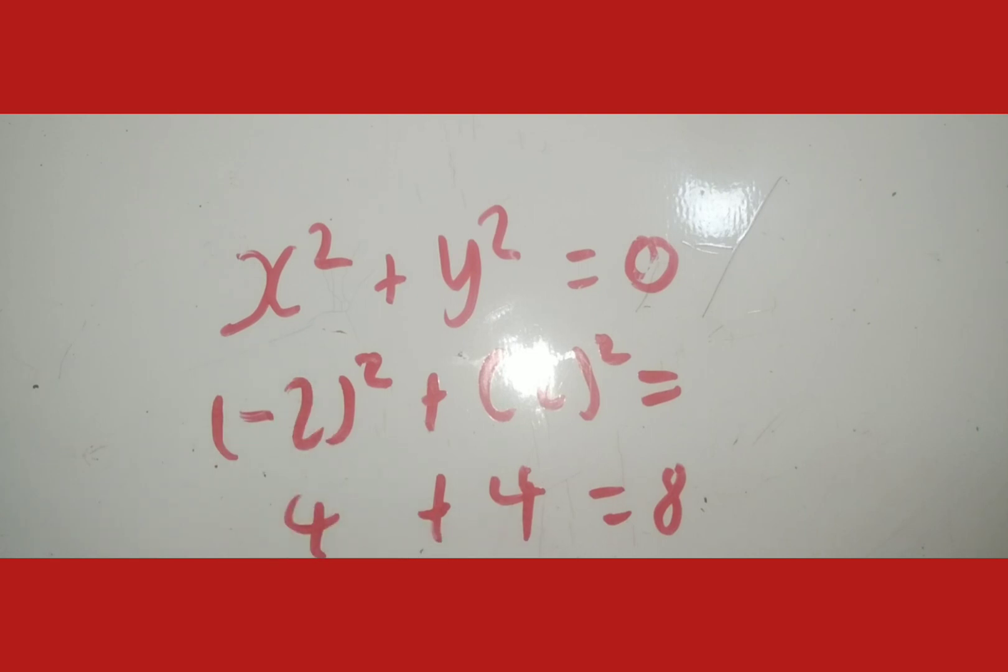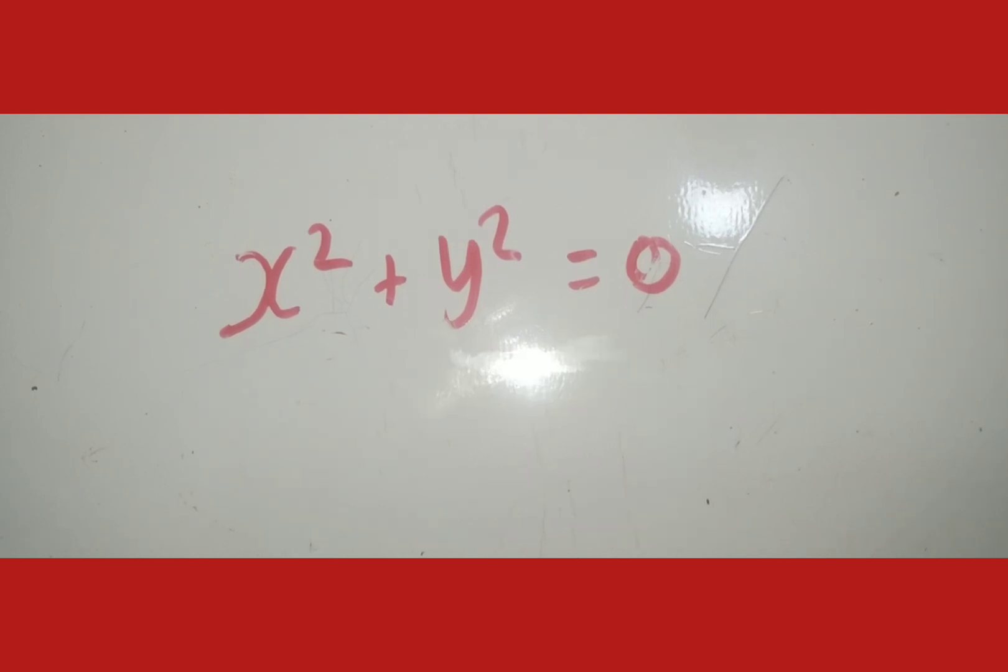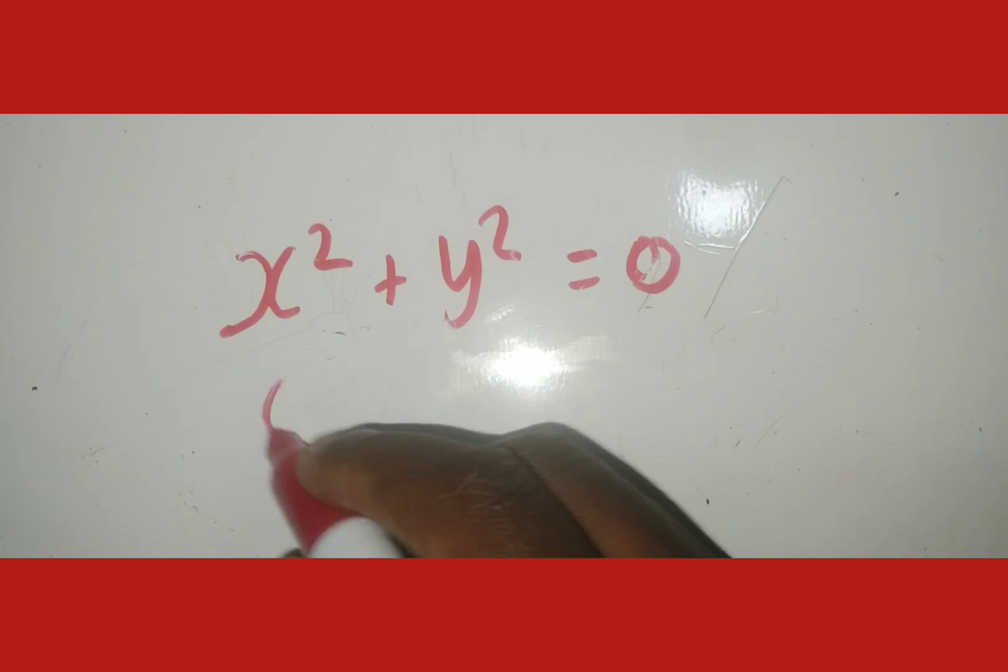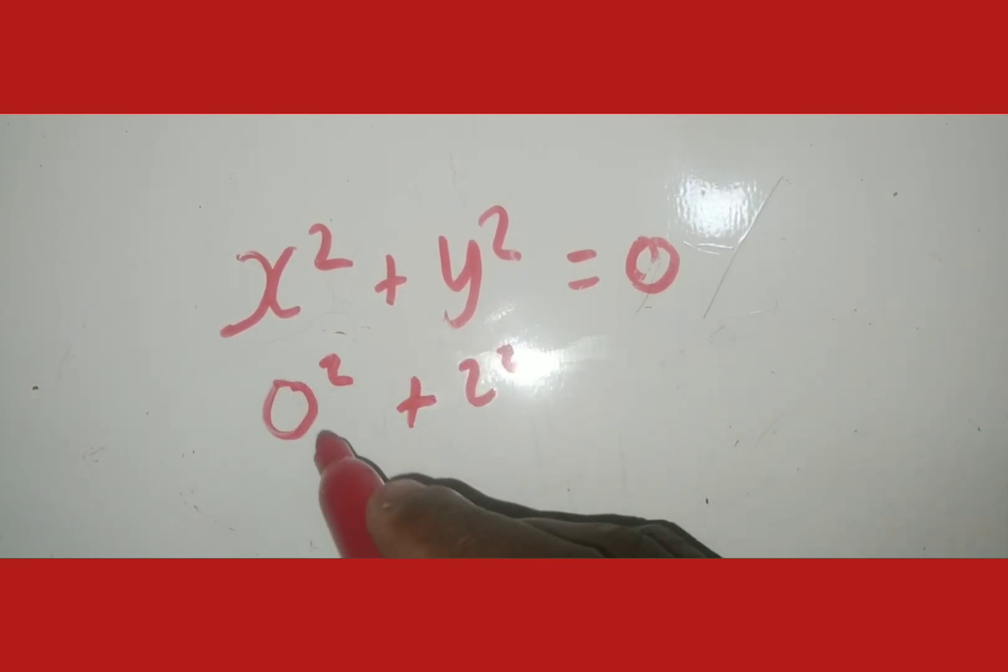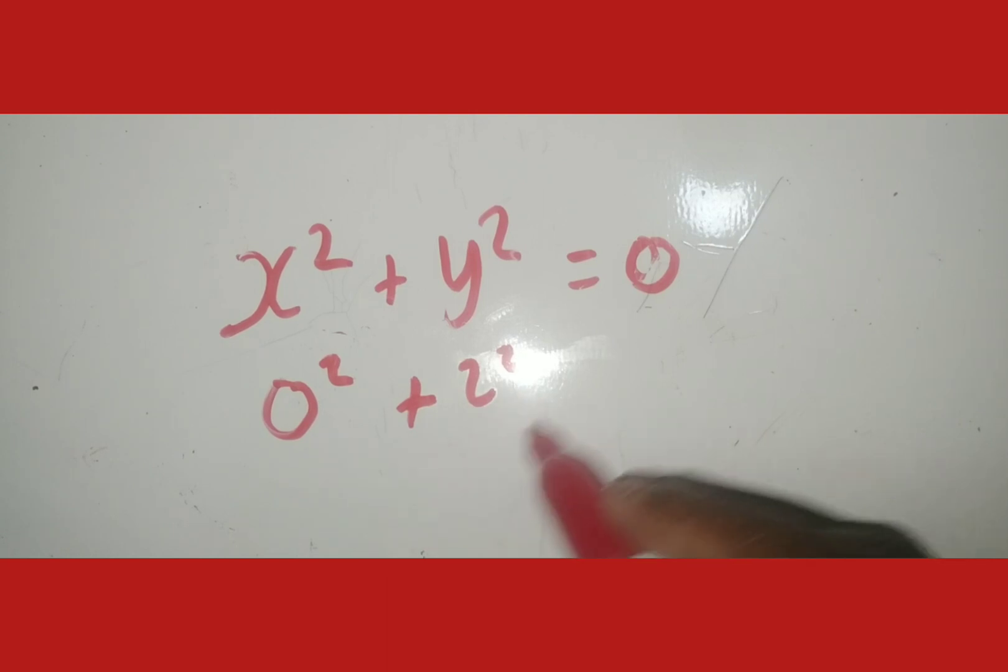What about if we make one of them to be 0 and one of them is non-zero? Let's make x = 0 and y = 2. So if x is 0 and y is 2, it means it's going to be 0² + 2². And then this is going to become 0 + 4, which is going to be 4. So it's not going to be 0. So if I make one of them 0, I will not get 0. If I make one negative, one positive, I will not get 0.